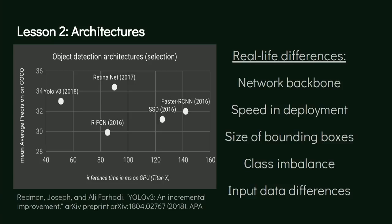Recently there are better architectures with better performance and faster speed. Better performance here is measured as mean average precision on COCO. However, a lot of customers are actually not interested in mean average precision, and COCO has some quirks when it comes to bounding box sizes.